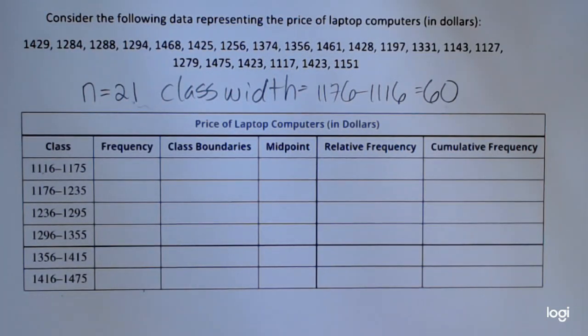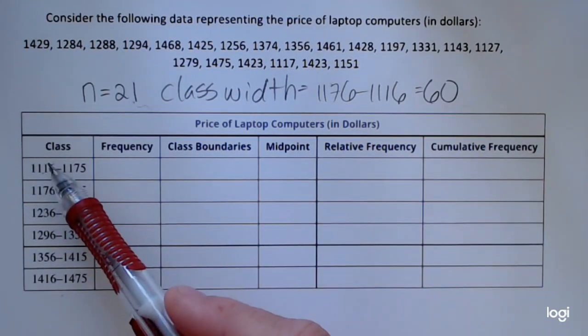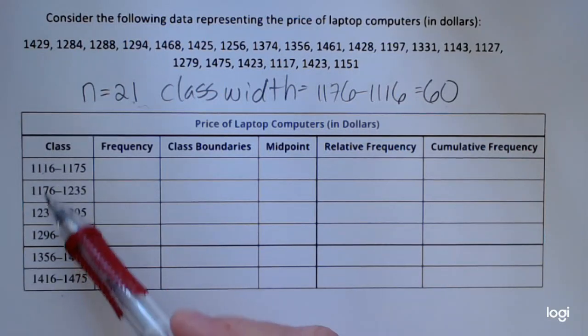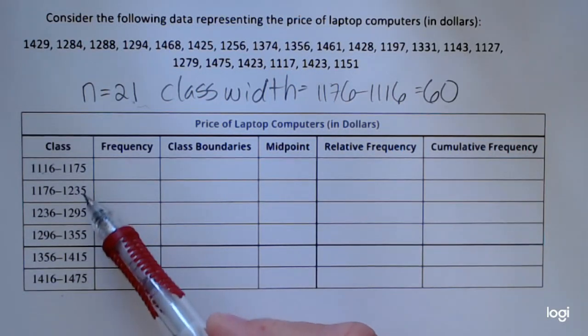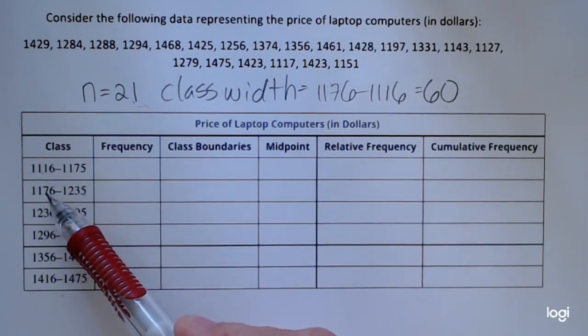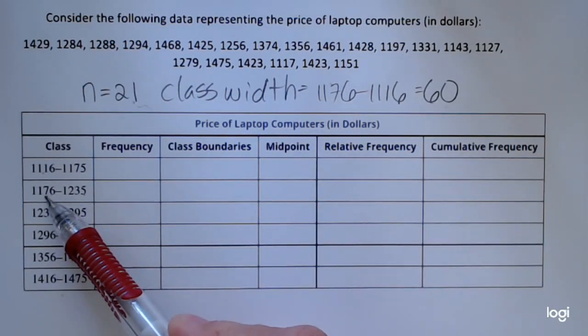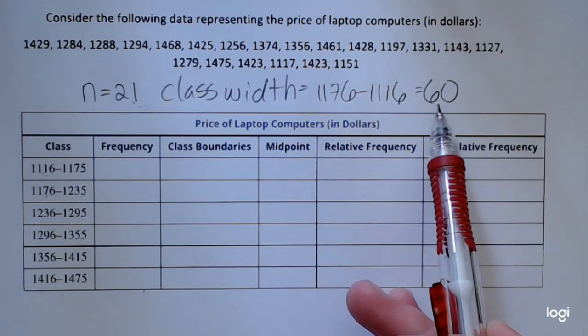To find the class width, you subtract either two consecutive lower class limits or find the difference between two consecutive upper class limits. So I went ahead and found the class width by taking the second lower class limit and then subtracting the first lower class limit, and that is 60.